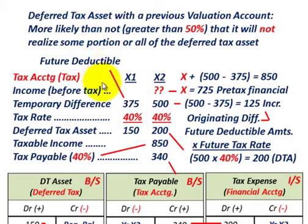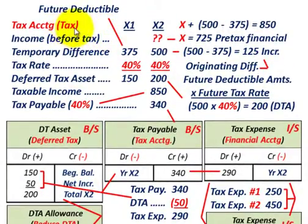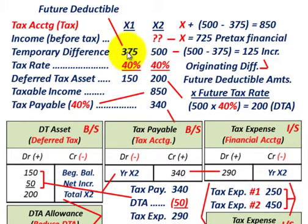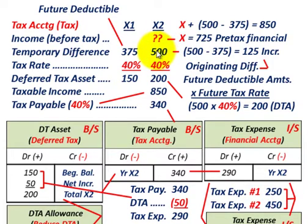Let's go down and look at our example. We'll look at it from our tax accounting basis, and we're going to be looking at two years: year X1 and year X2. In year X1, we're going to have this temporary difference of $375,000 — everything is in thousands of dollars. And for year X2, this temporary difference is going to increase to $500,000.